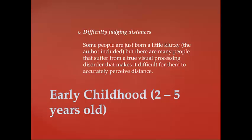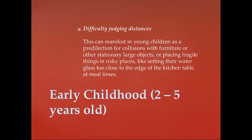Difficulty judging distances. Some people are just born a little klutzy, but there are many people who suffer from a true visual processing disorder that makes it difficult to accurately perceive distance. This can manifest in young children as a tendency for collisions with furniture or other stationary large objects, or placing fragile things in risky places such as setting their water glass too close to the edge of the table.